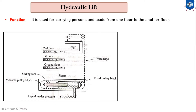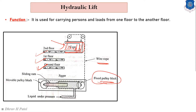From this sketch, let us understand the construction of the hydraulic lift. The lift has a ground floor, first floor, and second floor. One cage is there where we place loads or where persons can stand. It is attached with a wire rope connected to a fixed pulley block. There are two pulleys — the right-hand side pulley is a fixed pulley and the left-hand side pulley is a movable pulley. That pulley is attached with a sliding ram, which is a piston and cylinder type arrangement called a jigger.